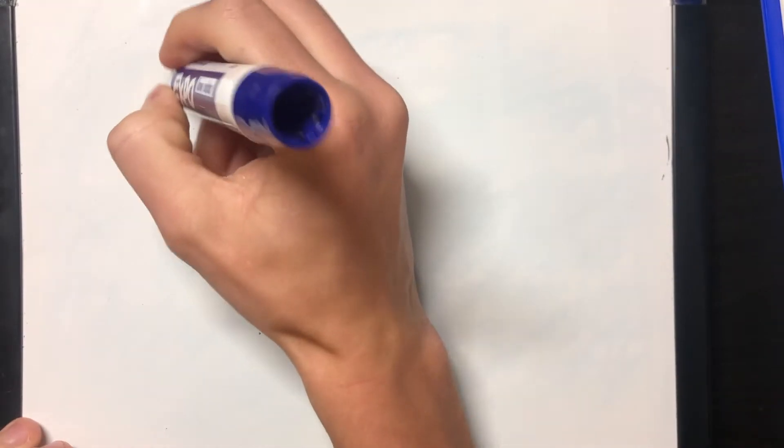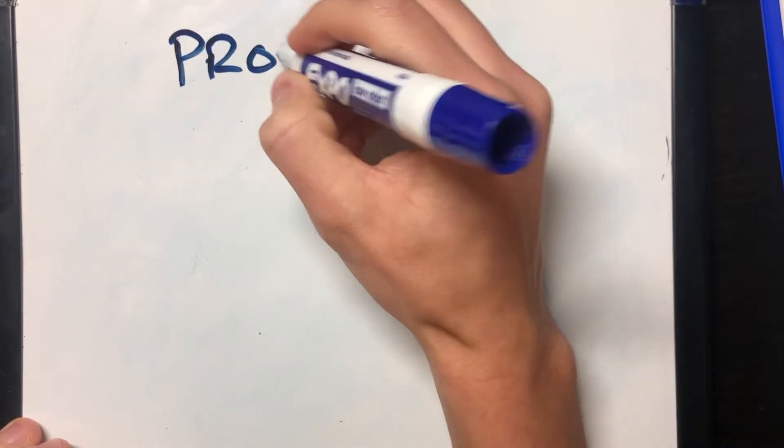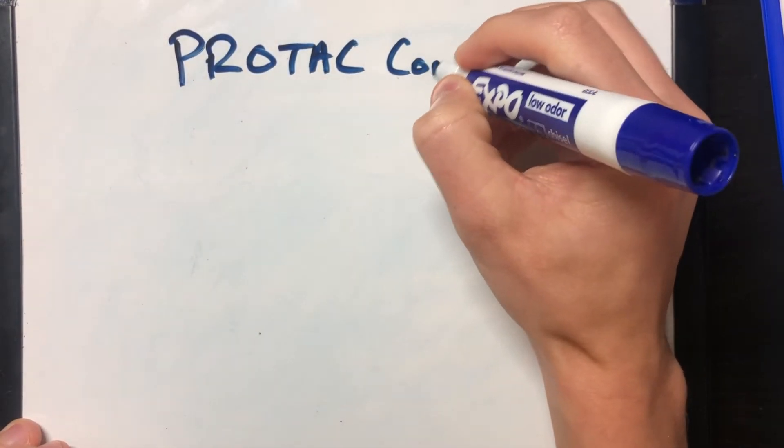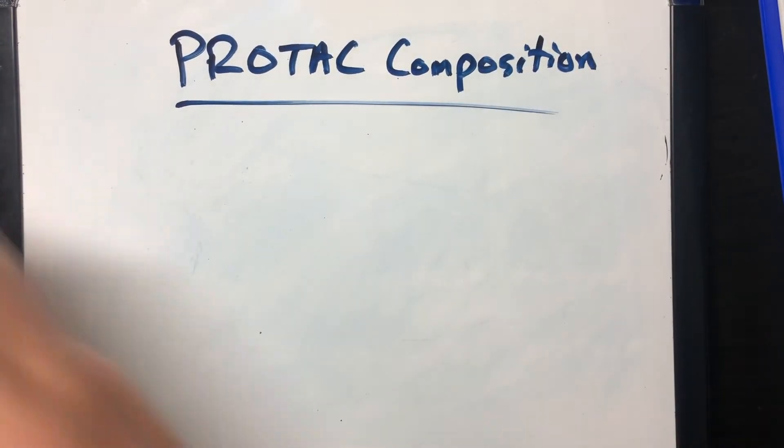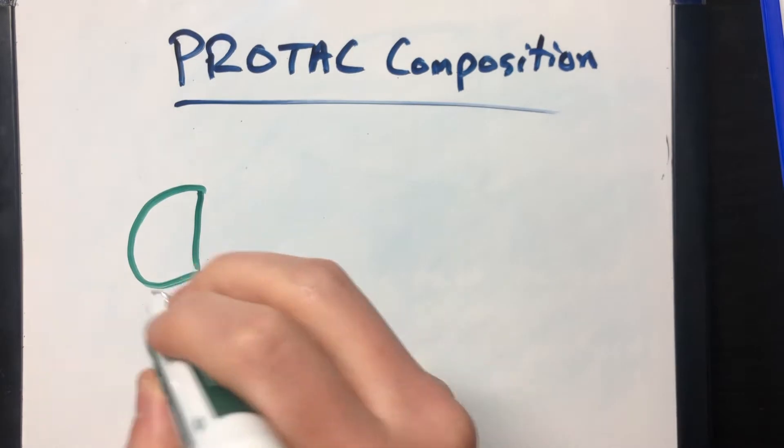The first topic to cover is PROTAC composition. These small biomolecules have two distinct active domains covalently bound by a linker. The first head drawn represents the ligand that selectively binds to the target protein.